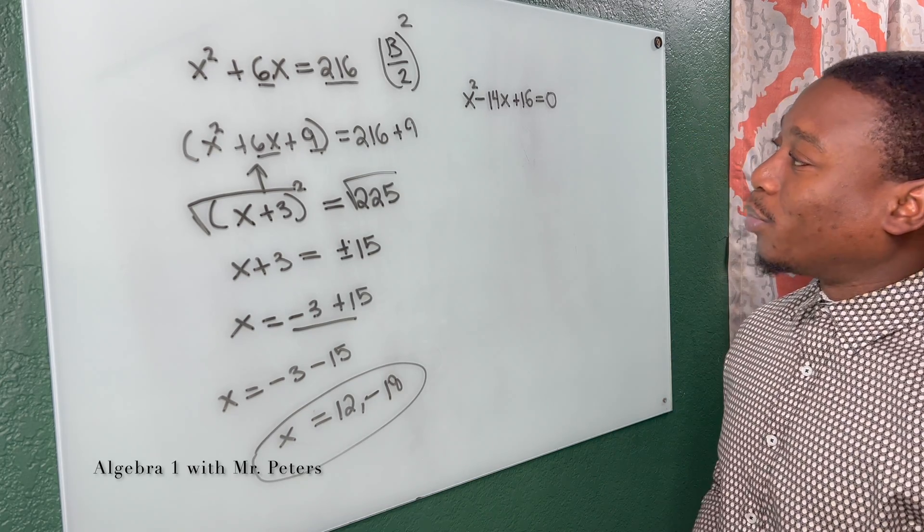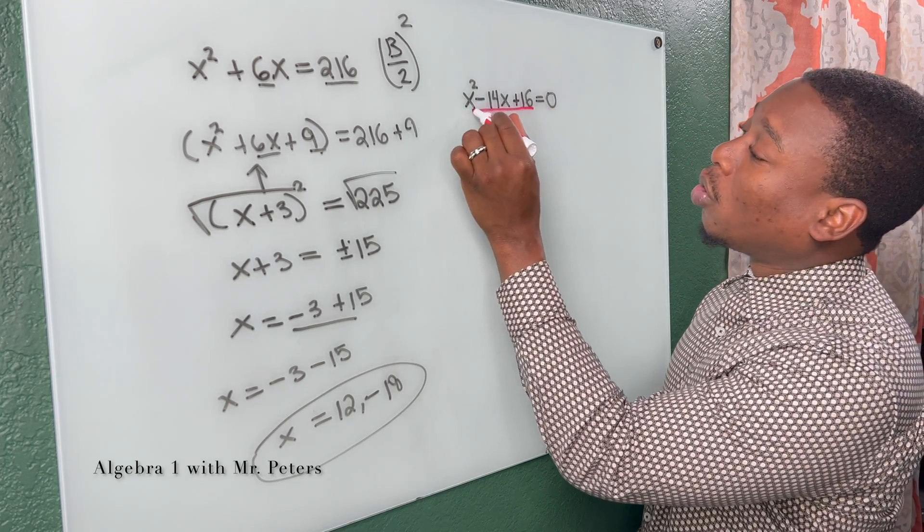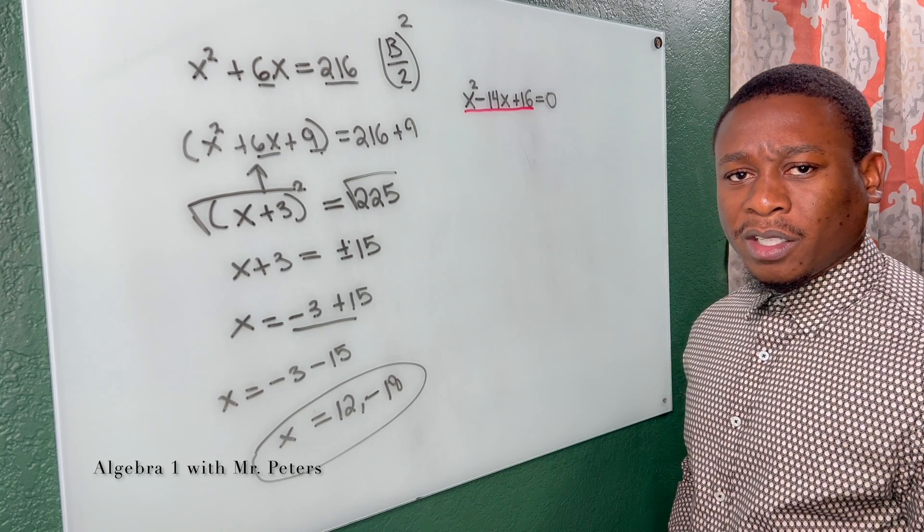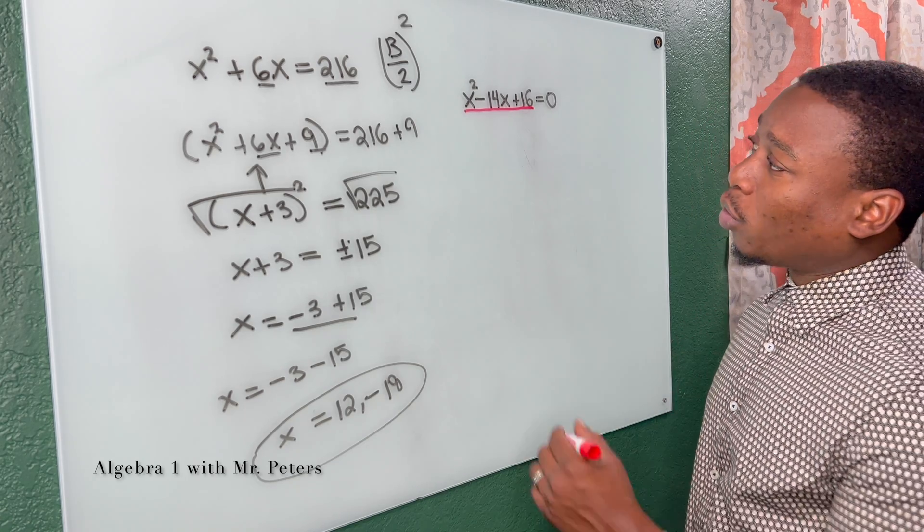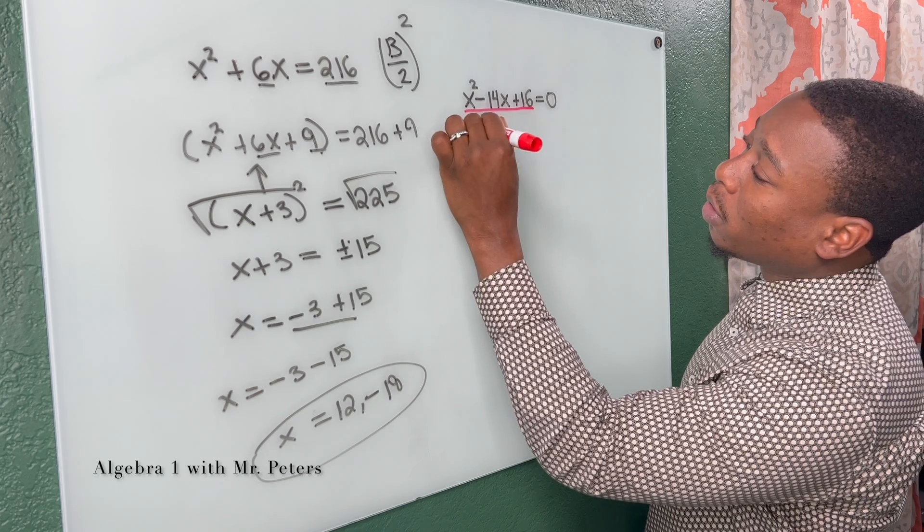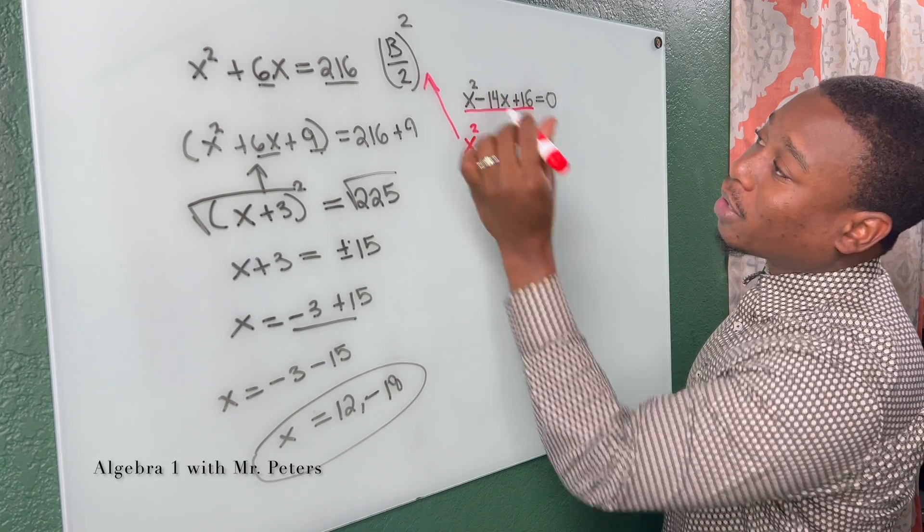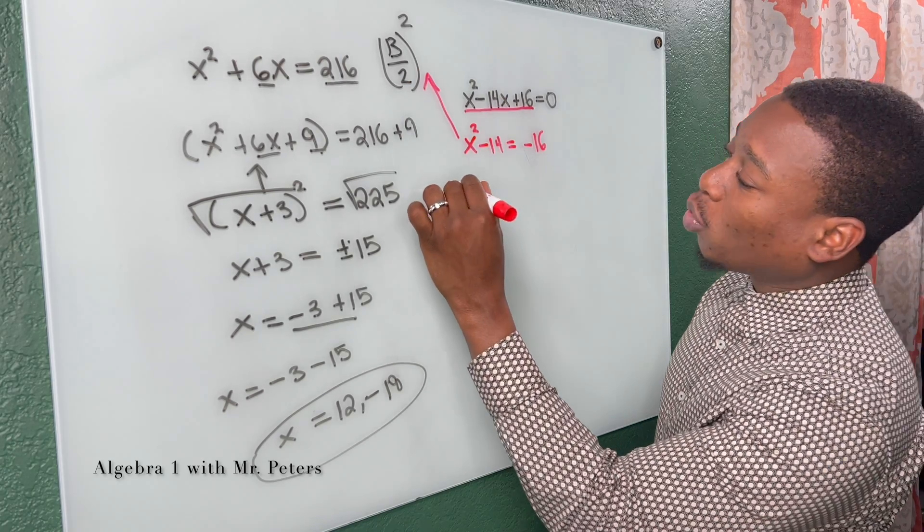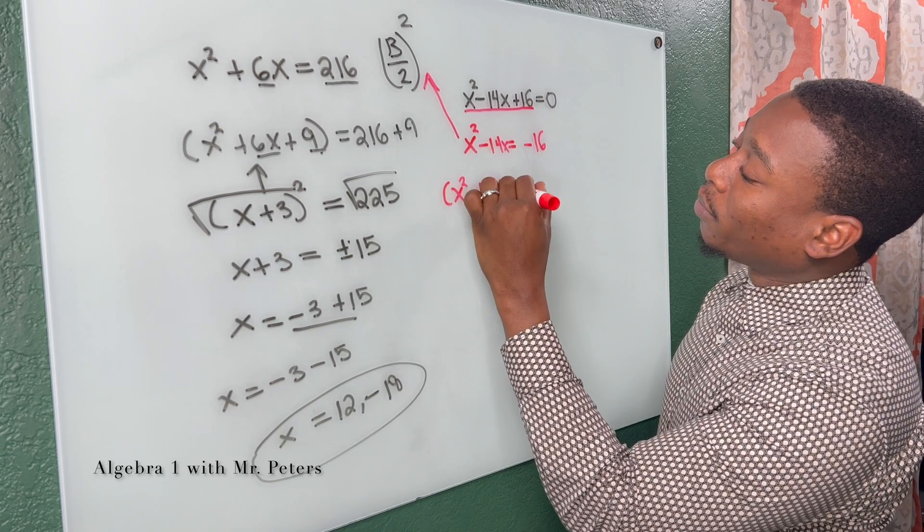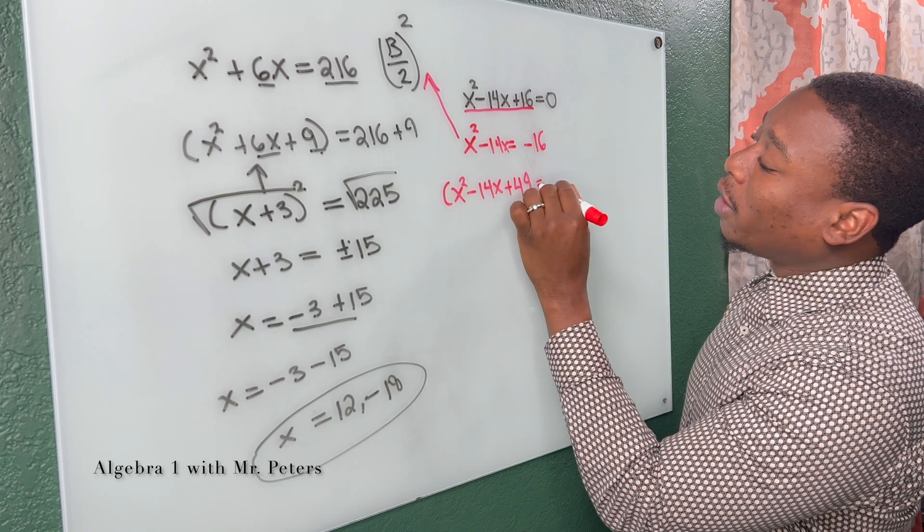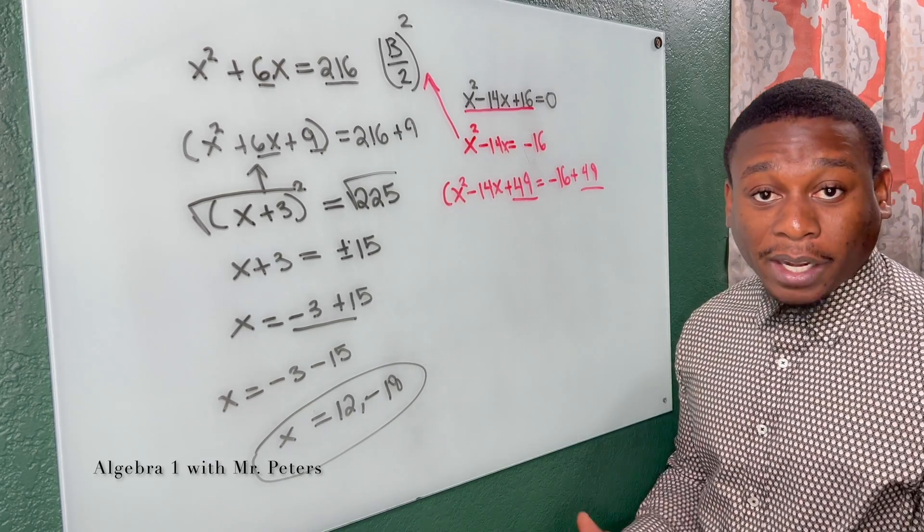Now let's look over in our second example. And in this example too, if we look, we can't factor that. There's no two factors that will multiply to give us 16, add 14. So what we're going to do is the same thing. We're going to move 16 over. So I have x squared minus 14x is equal to negative 16. When I follow this b over 2 squared, my trinomial is going to be x squared minus 14x plus 49. And that is equal to negative 16 plus 49. We completed the square by adding that 49.